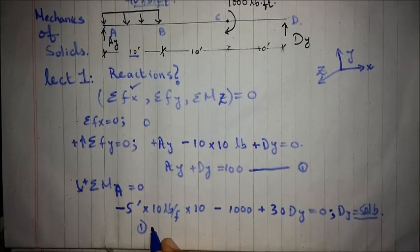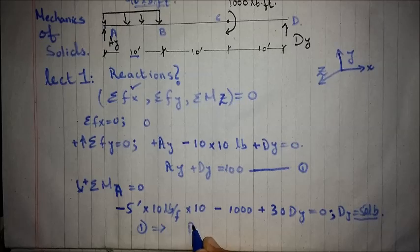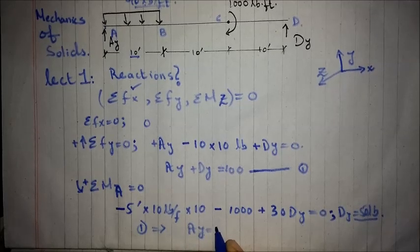Now, we substitute the value of dy in equation 1, gives value of ay as 50 pounds.